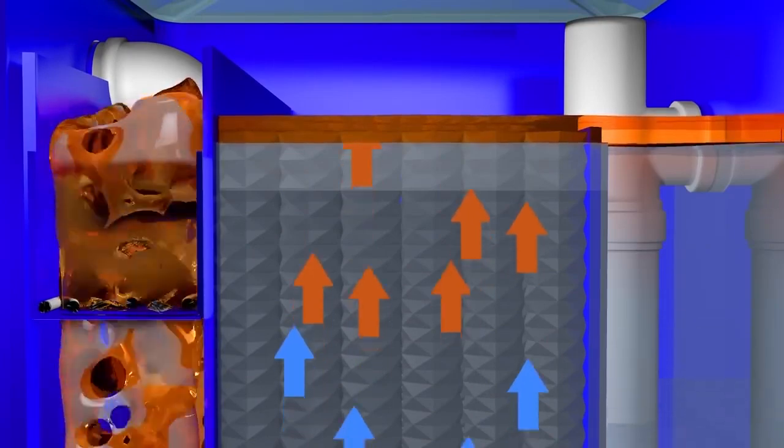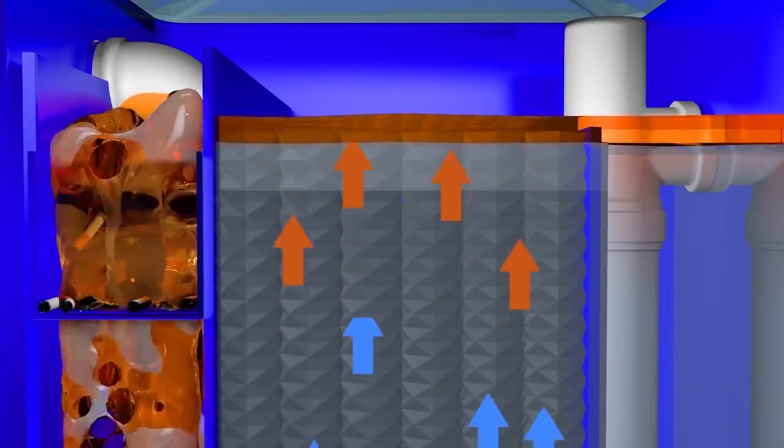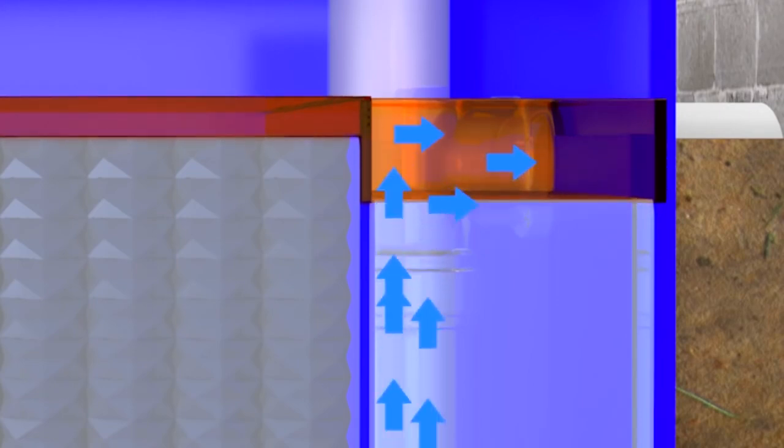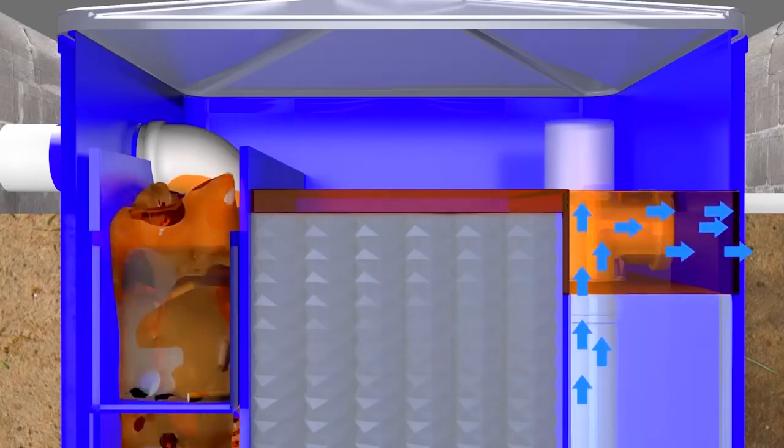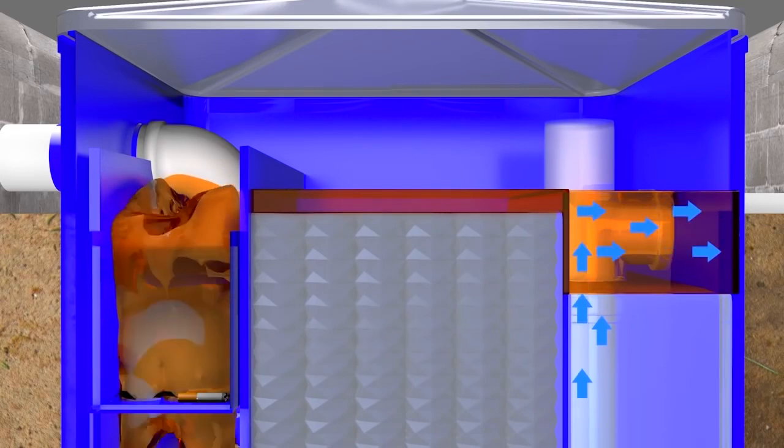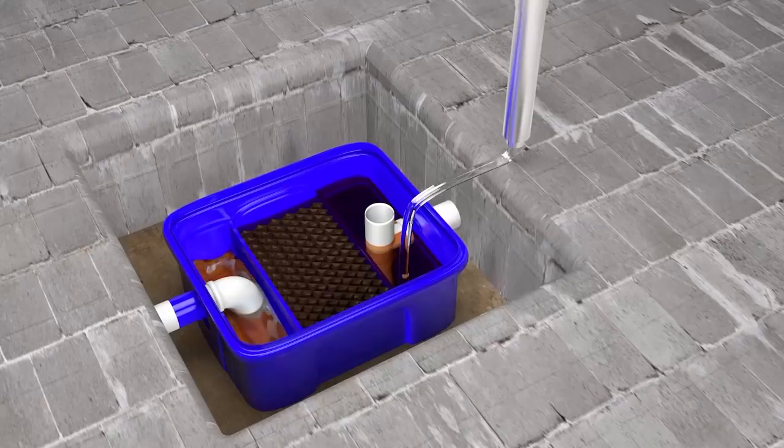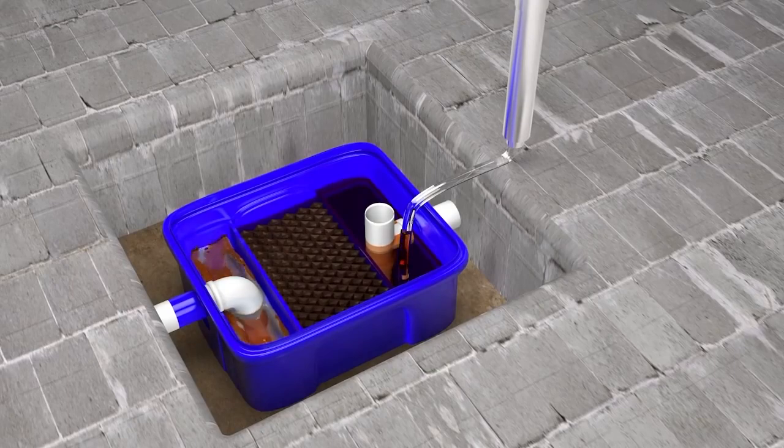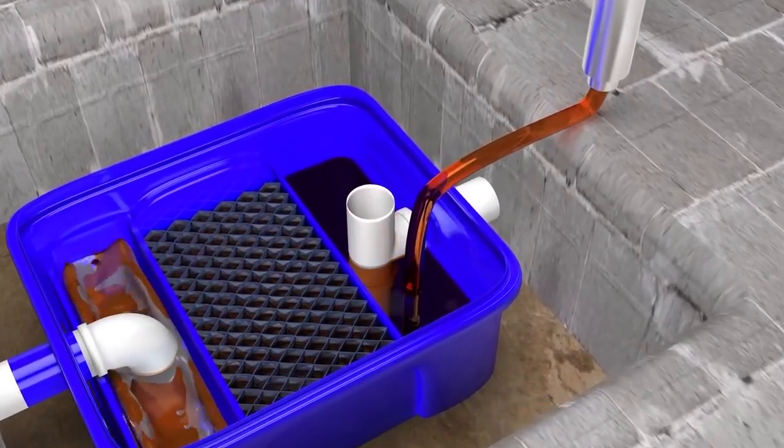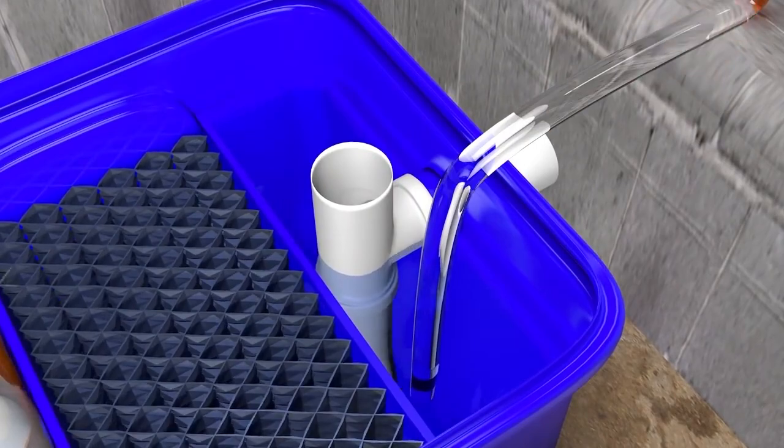In the third stage, the water, now within the acceptable parameters of environmental legislation, proceeds to be discharged into the sewage system or for reuse. The separated oil remains inside the box in suspension, awaiting drainage by a manual pump that comes with the equipment.